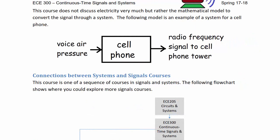This course does not discuss electricity very much, but rather the mathematical model to convert the signal through a system. The following model is an example of a system for a cell phone: your voice creates air pressure that goes into the cell phone, which then goes to some kind of electronic system to produce a radio frequency signal to a cell phone tower.